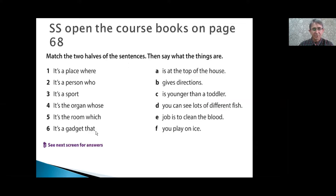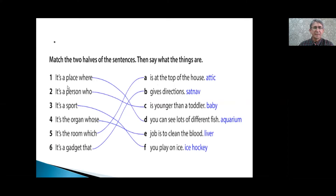You've got one minute to do this exercise — match the two halves of the sentences. It's a place where you can see lots of different fish: Aquarium. It is a person who is younger than a toddler: Baby. It's a sport which you play on ice — Ice hockey. It's a sport that you play on ice.